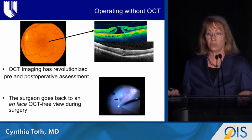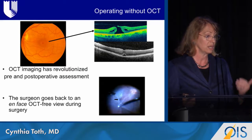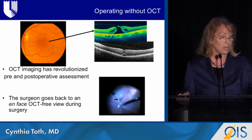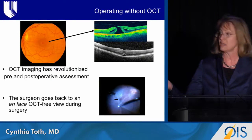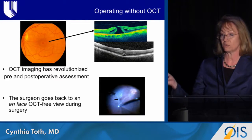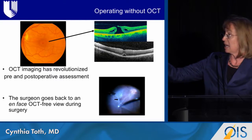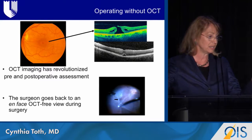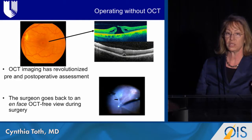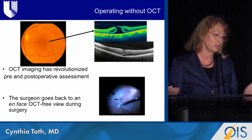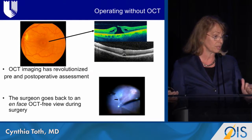OCT imaging has revolutionized our pre- and post-operative assessment of patients. The orange view, or the Helmholtz view from the 1850s, uses white light to view the fundus. Although we can identify that orange-red circle, the cross-section from OCT is dramatically different and informs the surgeon both before and after surgery.